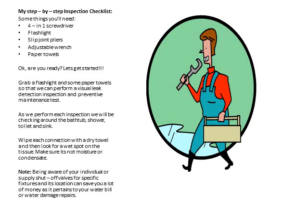As we perform each inspection, we will be checking around the bathtub, shower, toilet and sink. Wipe each connection with a dry towel and then look for a wet spot on the tissue. Make sure it's not moisture or condensate. Be aware of your individual supply shut-off valves for specific fixtures — knowing their location can save you a lot of money on your water bill or water damage repairs.